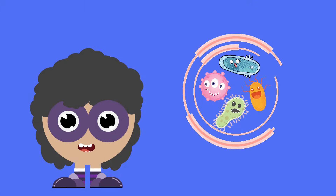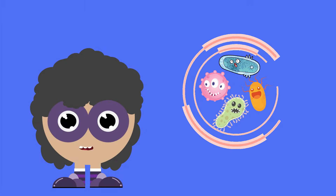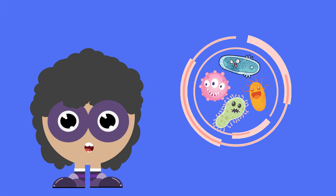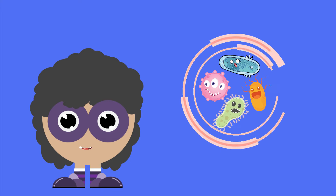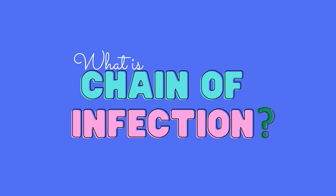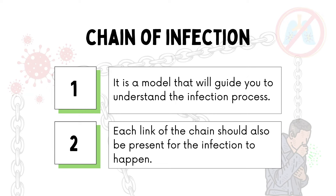We normally think that pathogens are the main cause of an infectious disease. But did you know that pathogens are only part of the factors of a communicable disease? The process is called the chain of infection. But what is the chain of infection? It is a model that guides us to understand the infection process.